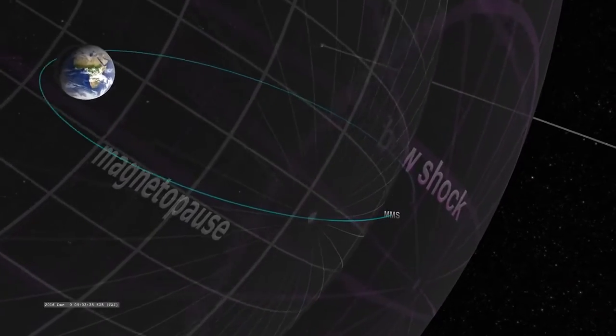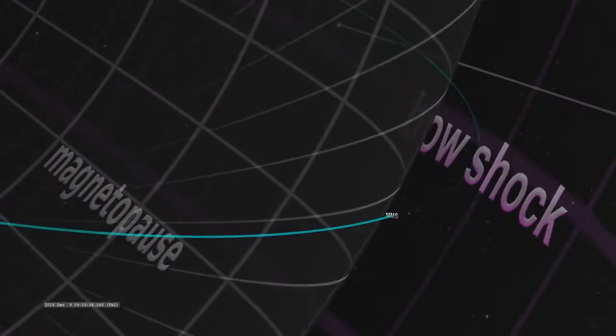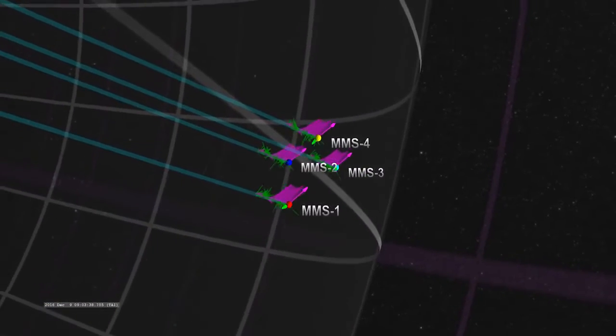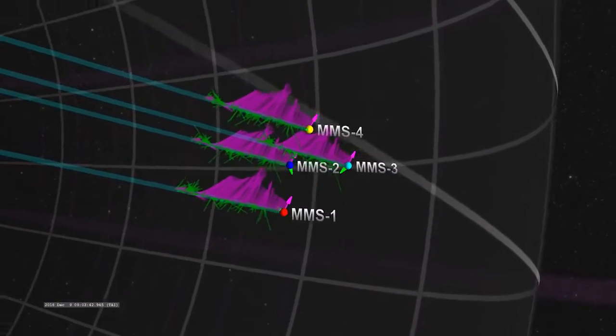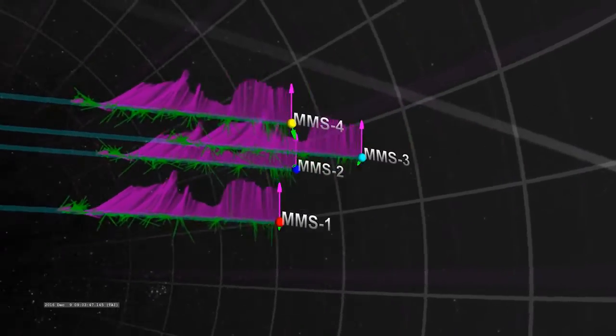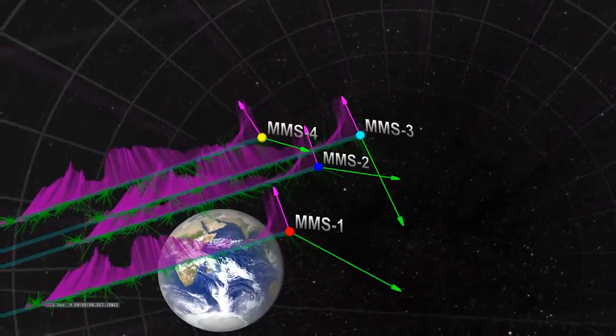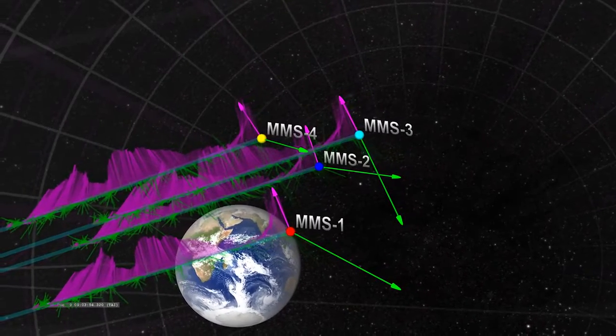MMS captured 3D observations by flying four identical spacecraft in a tight pyramid formation through the magnetosphere. These arrows show the hundreds of observations MMS took to measure the changes in particles and the magnetic field. This is the moment MMS sees bursts of energy from magnetic reconnection.